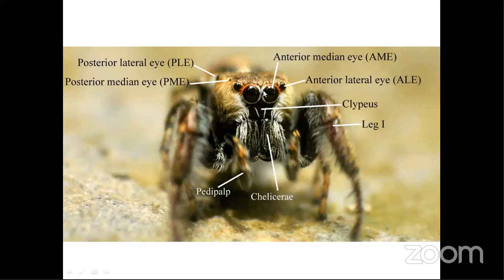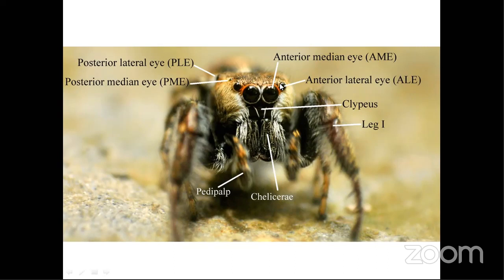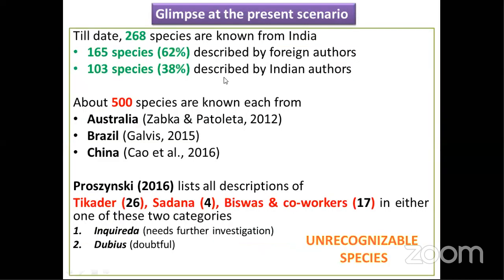Here is the front view of the jumping spider. We can see the large anterior median eyes and the anterior lateral eyes. The region between the chelicerae and the eyes is called the clypeus. There are the chelicerae with fangs, and these are the male pedipalps. This row of eyes is called the anterior set of eyes — the anterior median eye and the anterior lateral eye. The very small posterior median eye can be seen here, and a slightly larger posterior lateral eye.